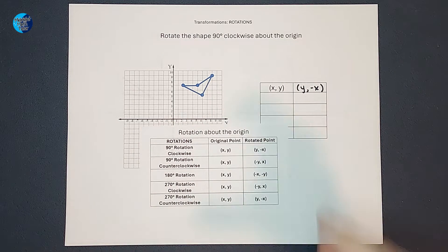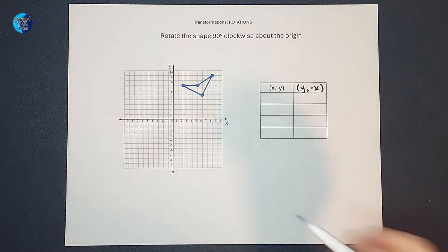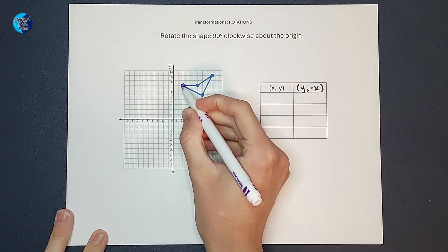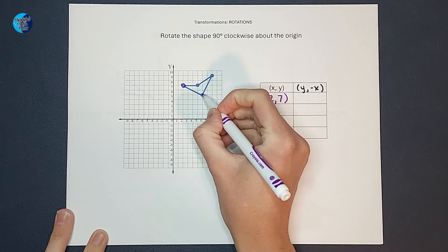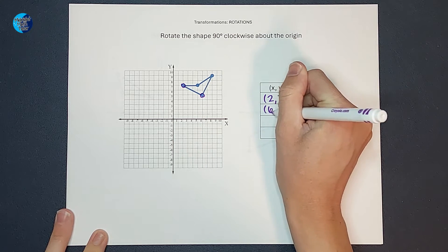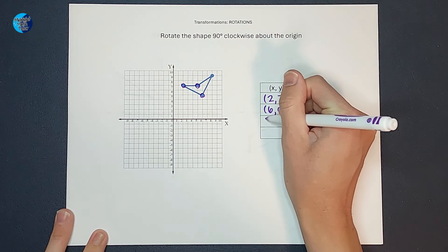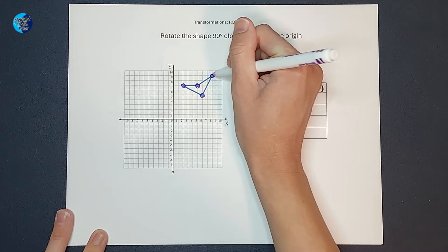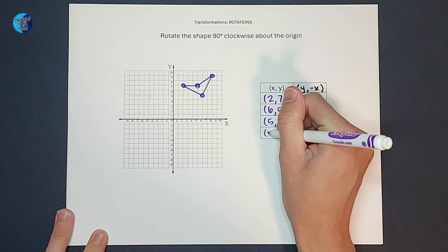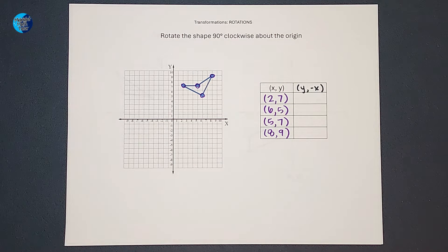So next thing I'm going to do is figure out what all these ordered pairs are. So this guy right here is two, seven. Then this one is six, five. Then we have five, seven. And this last one is going to be eight, nine. Now it doesn't matter what order you did those in. That's just the order I picked.